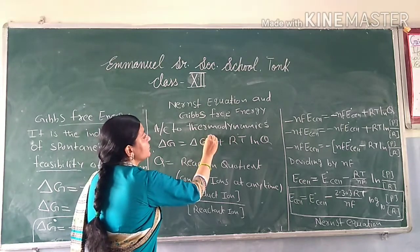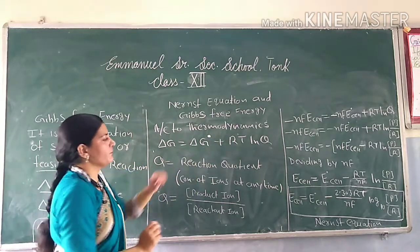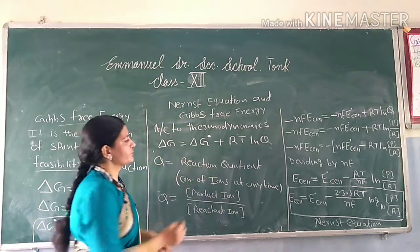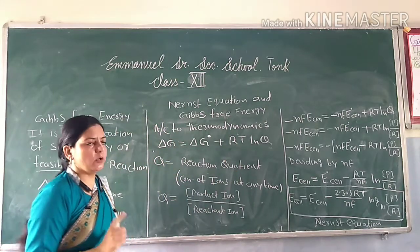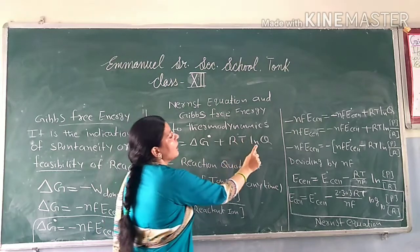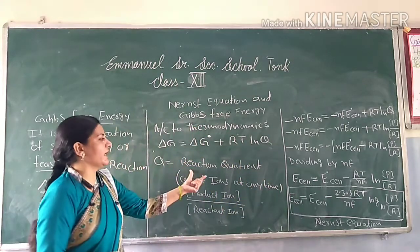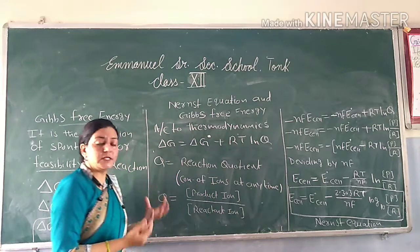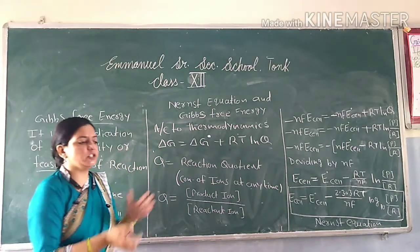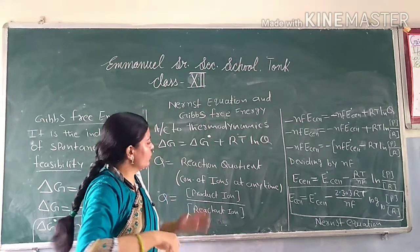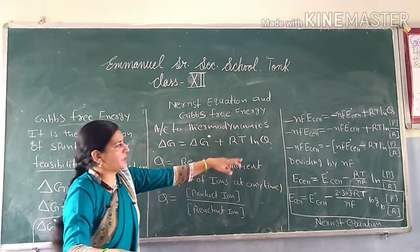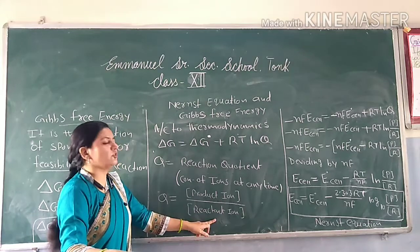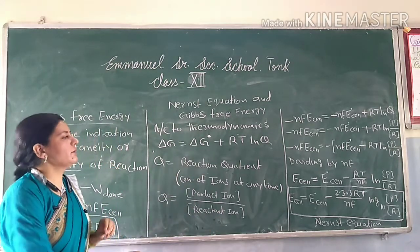The thermodynamic relation is: ΔG = ΔG° + RT ln Q, where R is the gas constant with value 8.314 joules per kelvin per mole, T is the temperature, and Q is the reaction quotient — a thermodynamic value representing the concentration of product ions divided by the concentration of reactant ions at any given time.